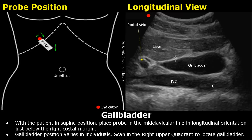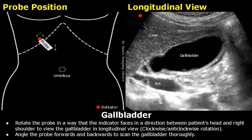You can rotate the probe clockwise and anticlockwise to scan the gallbladder after it is located. Keep the indicator facing towards the patient's head or the right shoulder. You can also angle the probe forwards and backwards to evaluate the gallbladder.